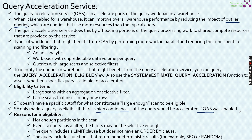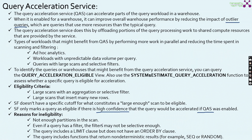If a query is marked as eligible for query acceleration service, Snowflake has done enough experimentation behind the scenes. Enabling query acceleration will enhance that specific query's performance. Reasons for ineligibility include: not enough partitions to scan, filters that may not be selective enough, a query with a LIMIT clause but no ORDER BY clause, or a query that includes a function returning non-deterministic results such as SEQUENCE or RANDOM.